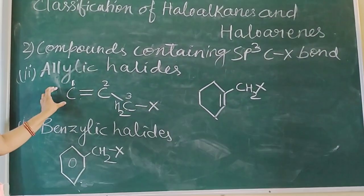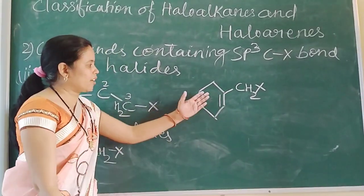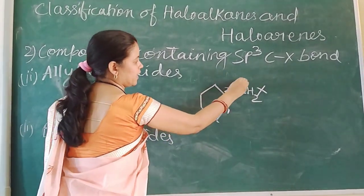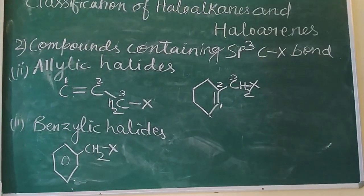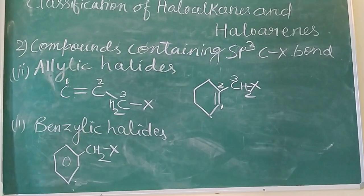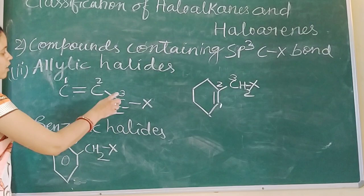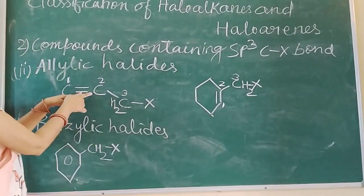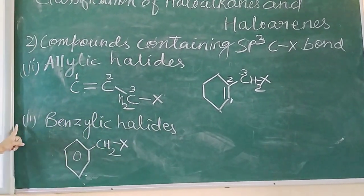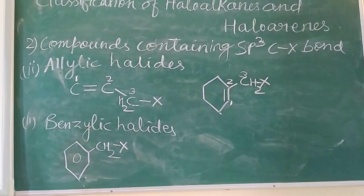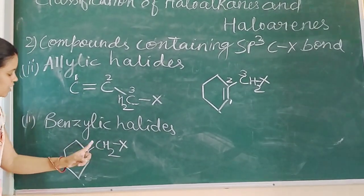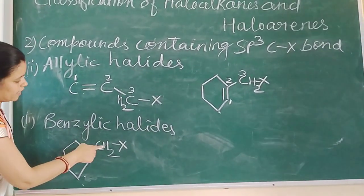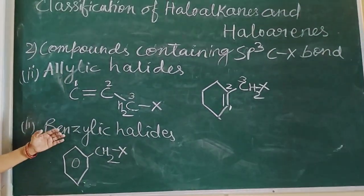The carbons adjacent to the double bond are called allylic carbons. We have seen this in cyclo-compounds also — this is the first carbon, second carbon adjacent to it, and the third carbon. If halogen is attached to that third carbon adjacent to the double bond, this condition is known as allylic halide. In allylic halide also, halogen is attached to an SP3 hybridized carbon — it is a single bond, not directly attached to the double bond. Next type is benzylic halide: halogen is attached to that carbon which is directly attached to the benzene ring. This condition is known as benzylic halide.